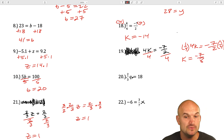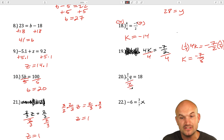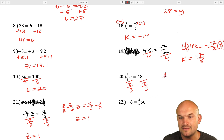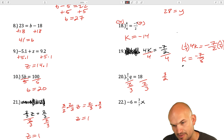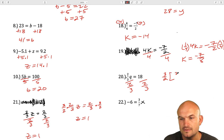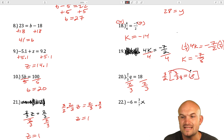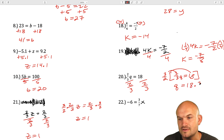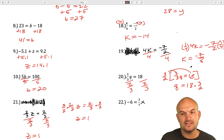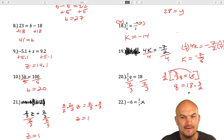The next one: we have q being multiplied by two thirds. You could either divide by two thirds or multiply by the reciprocal. So I'll multiply by three halves: three halves times two thirds q equals 18. Multiply the reciprocal times everything, and that gives you q equals 18 times three halves. Divide the 2 into the 18 to get 9, then multiply 9 times 3 — 9 times 3 is going to be 27.